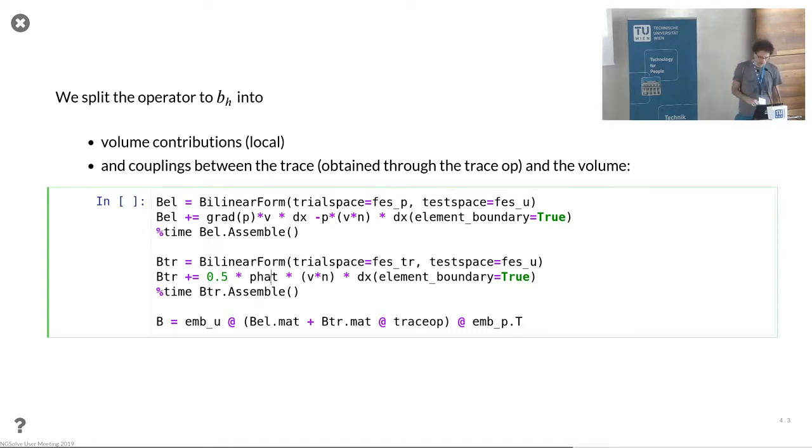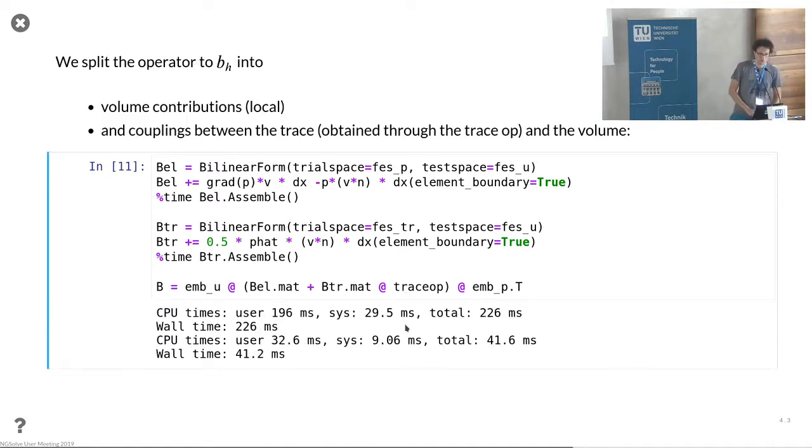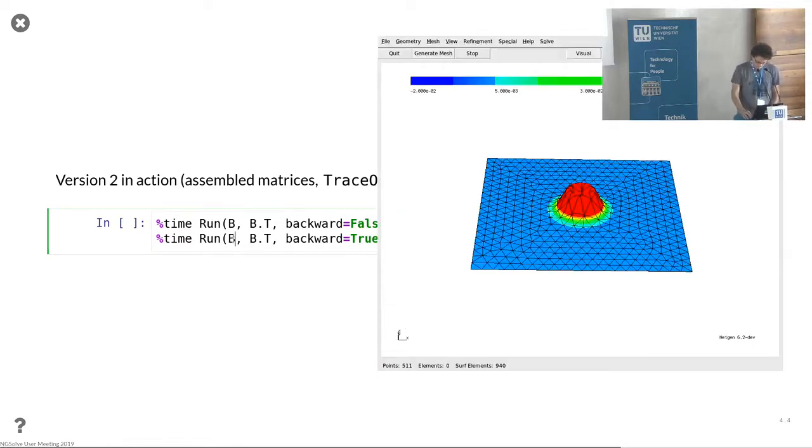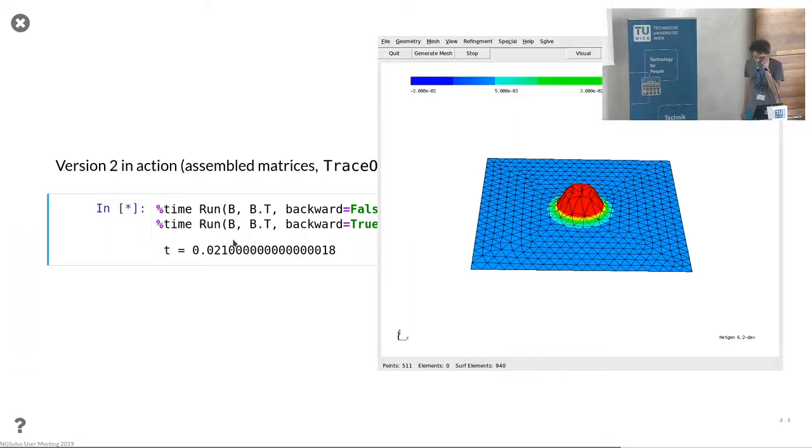This is how you write down the same formulation with the centered flux approximation with those variables. You put together a fitting operator by applying the corresponding embeddings from left and right.